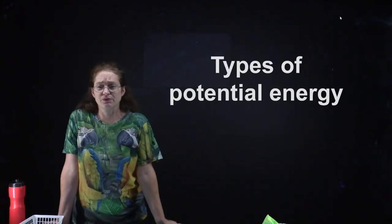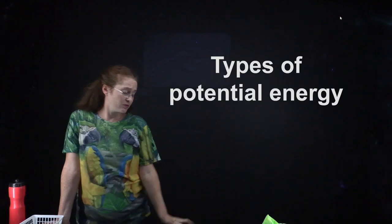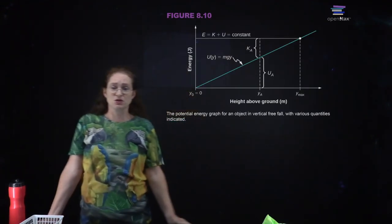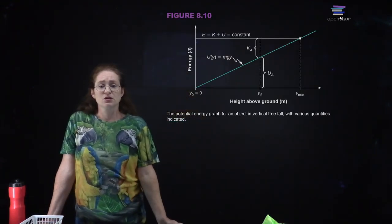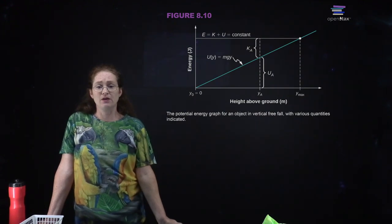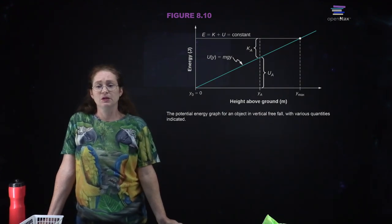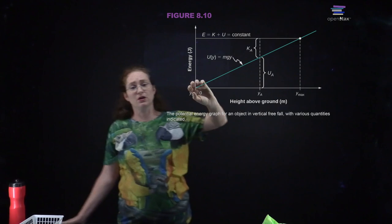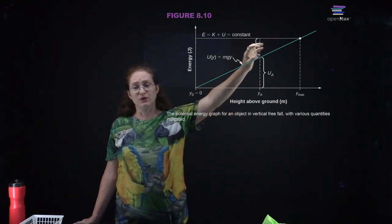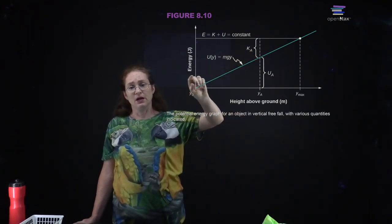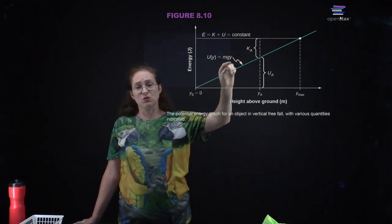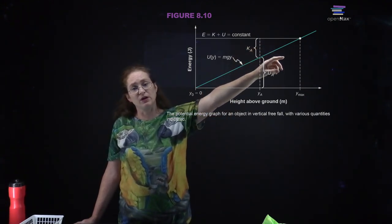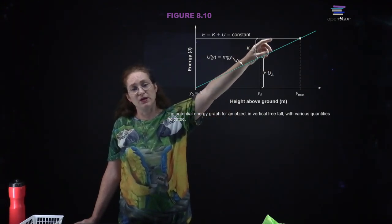There are different types of potential energy. There's gravitational potential energy — you can plot the energy as a function of height above the ground, and the energy is simply mgy, so the higher you go, the greater your potential energy.